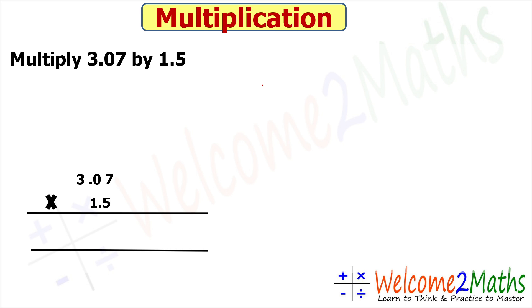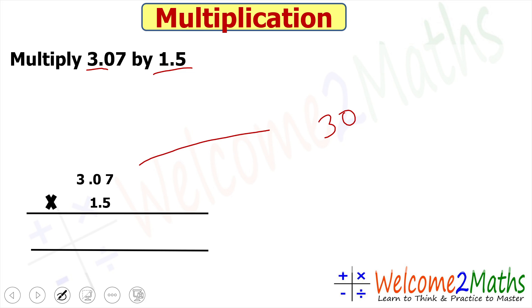We have to multiply 3.07 by 1.5. Both numbers are decimal numbers. To solve this, our first number — the multiplicand — is 3.07. Instead of 3.07, we write it without the decimal point as 307. Similarly, 1.5 we write as 15.